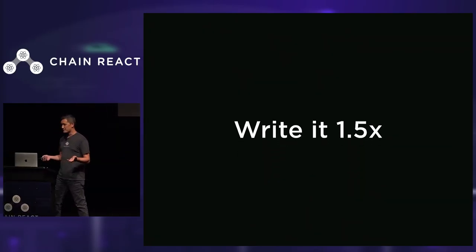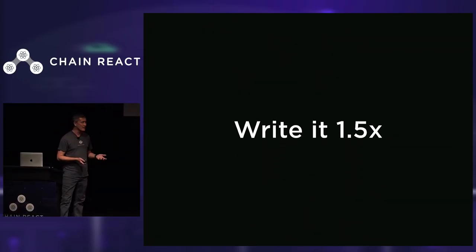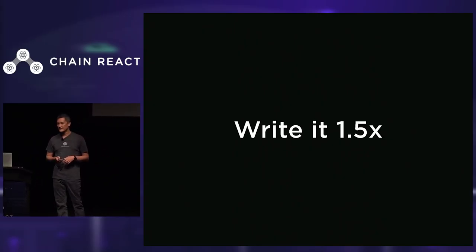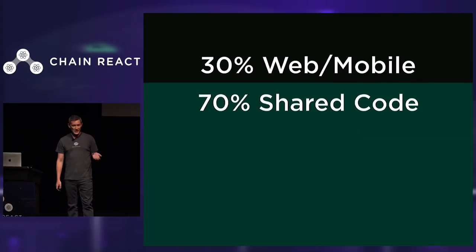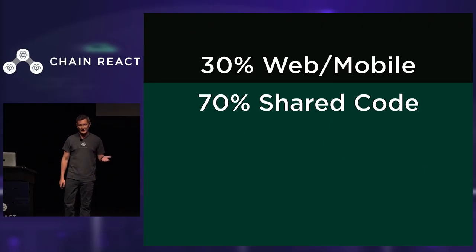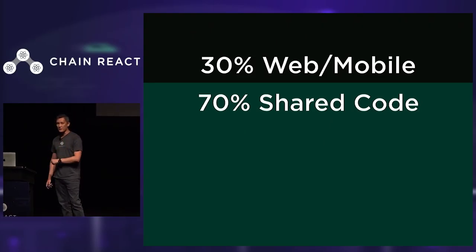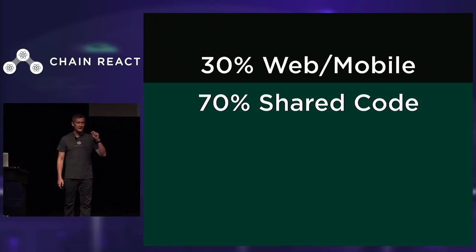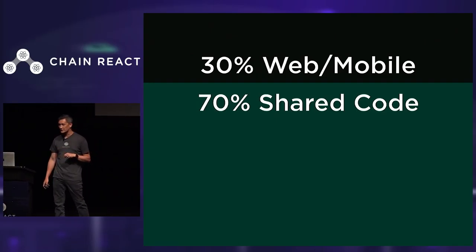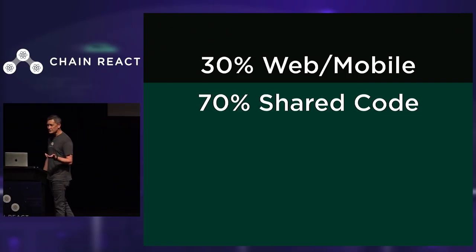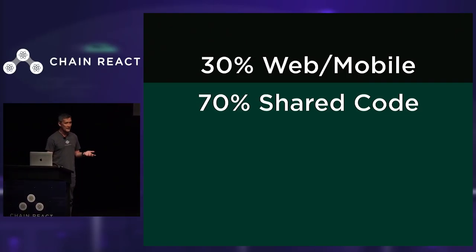Now we can create rich and complex components that look great on any platform, but the business logic only needs to be written once. This is the link picker component — we built it for the web and it looks amazing. But this is the same component on mobile, and what's great is it looks and feels amazing on mobile as well, but it has a distinct mobile experience. It still shares a large amount of code with the web component cousin.